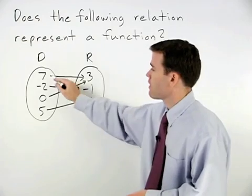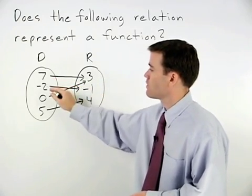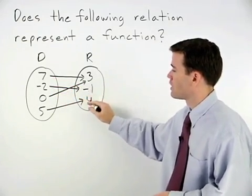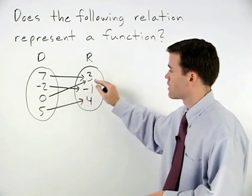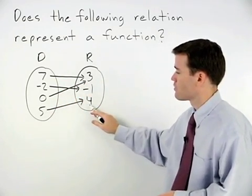Notice that the 7 is connected with the 3, the negative 2 is connected with the negative 1, the 0 is connected with the 3, and the 5 is connected with the 4.